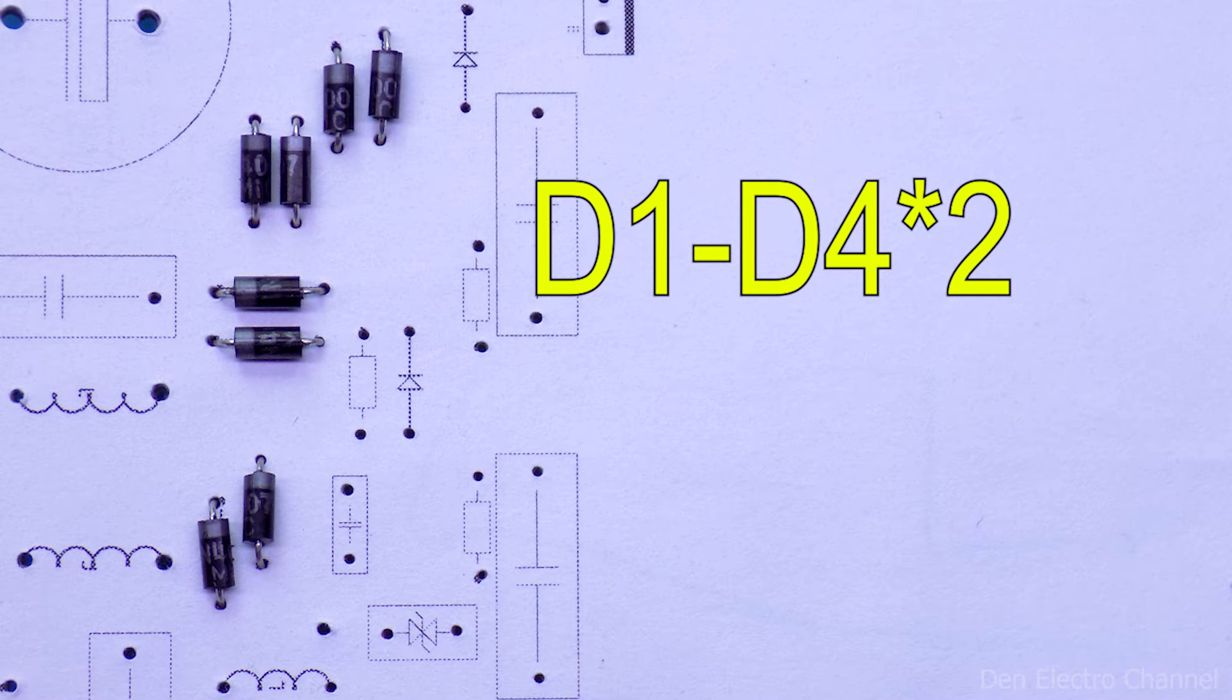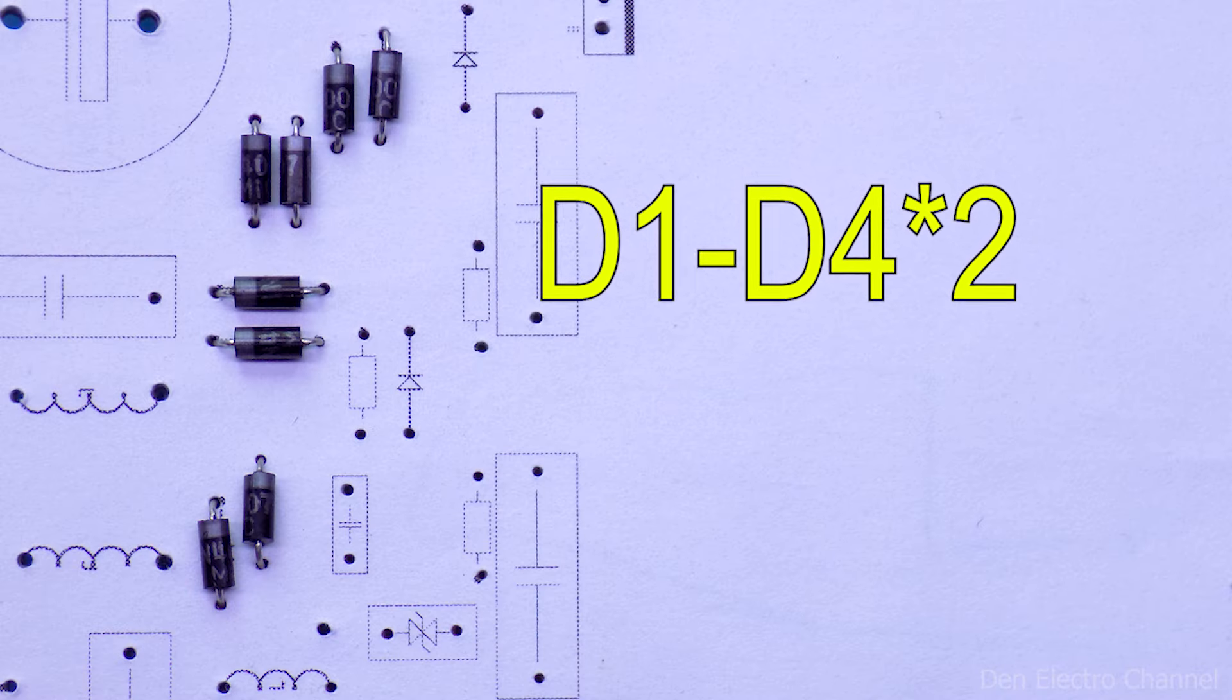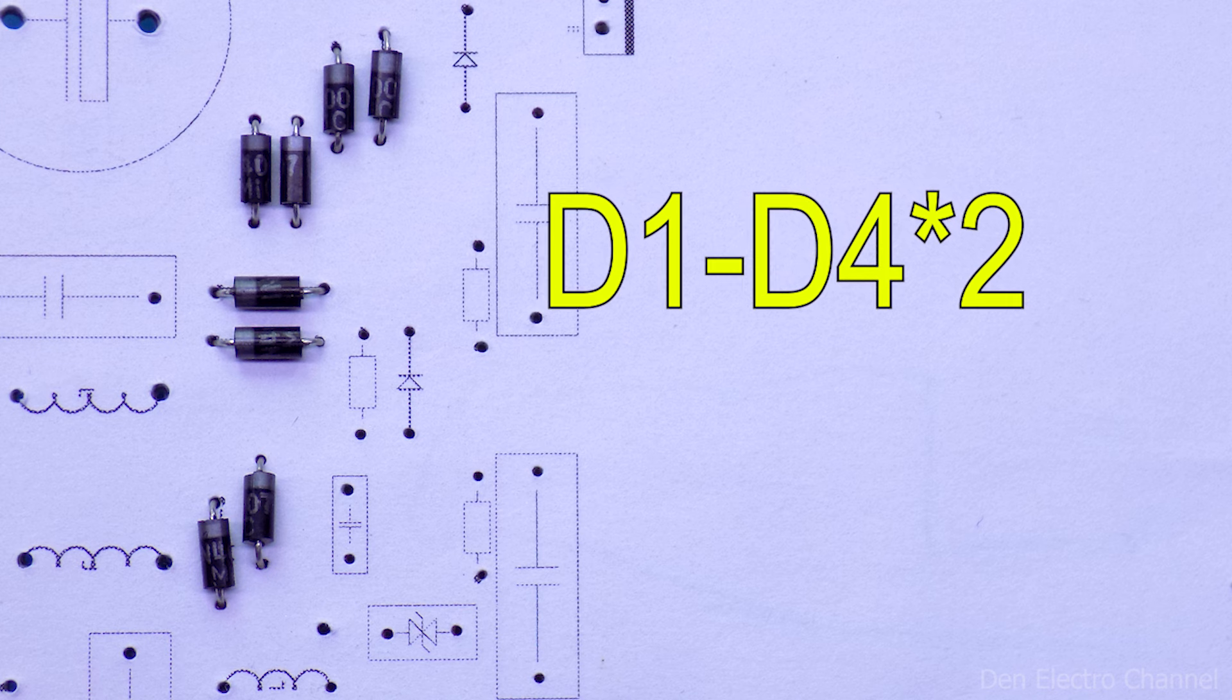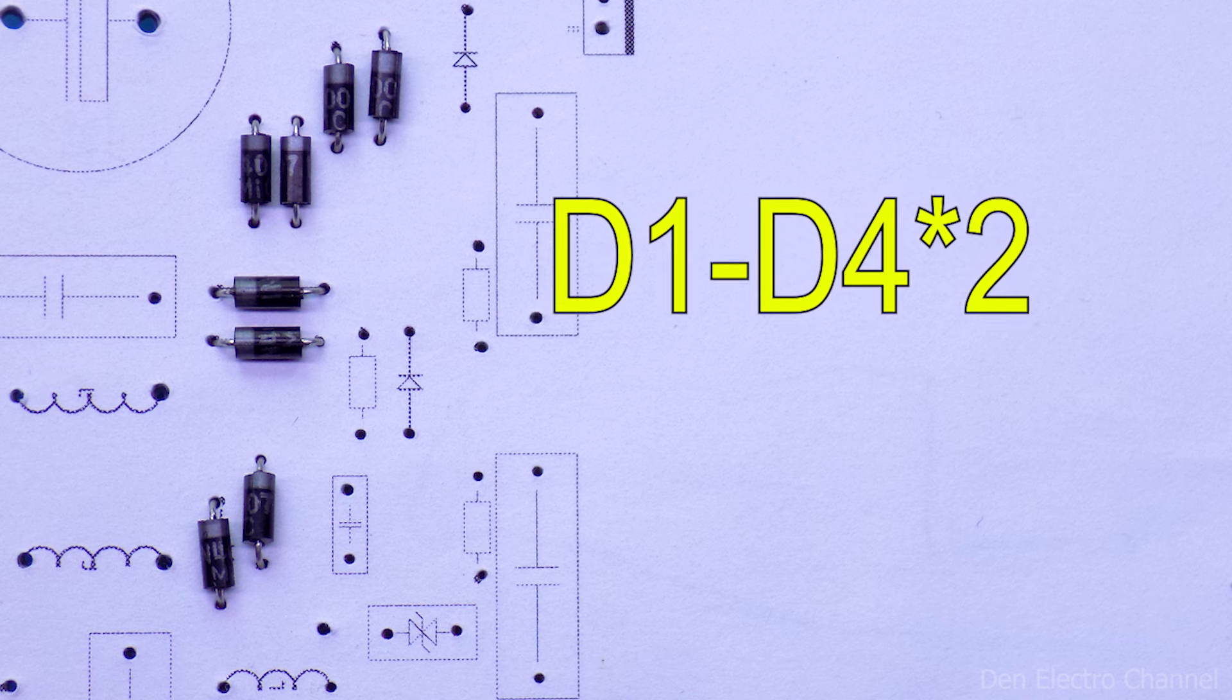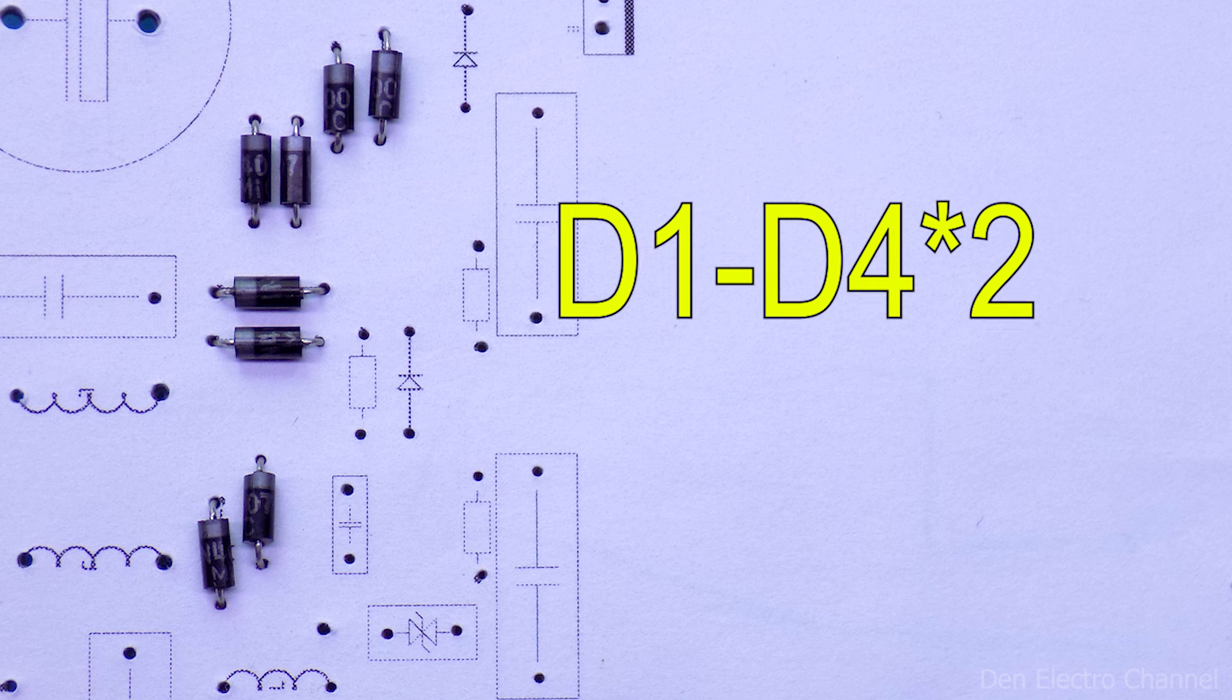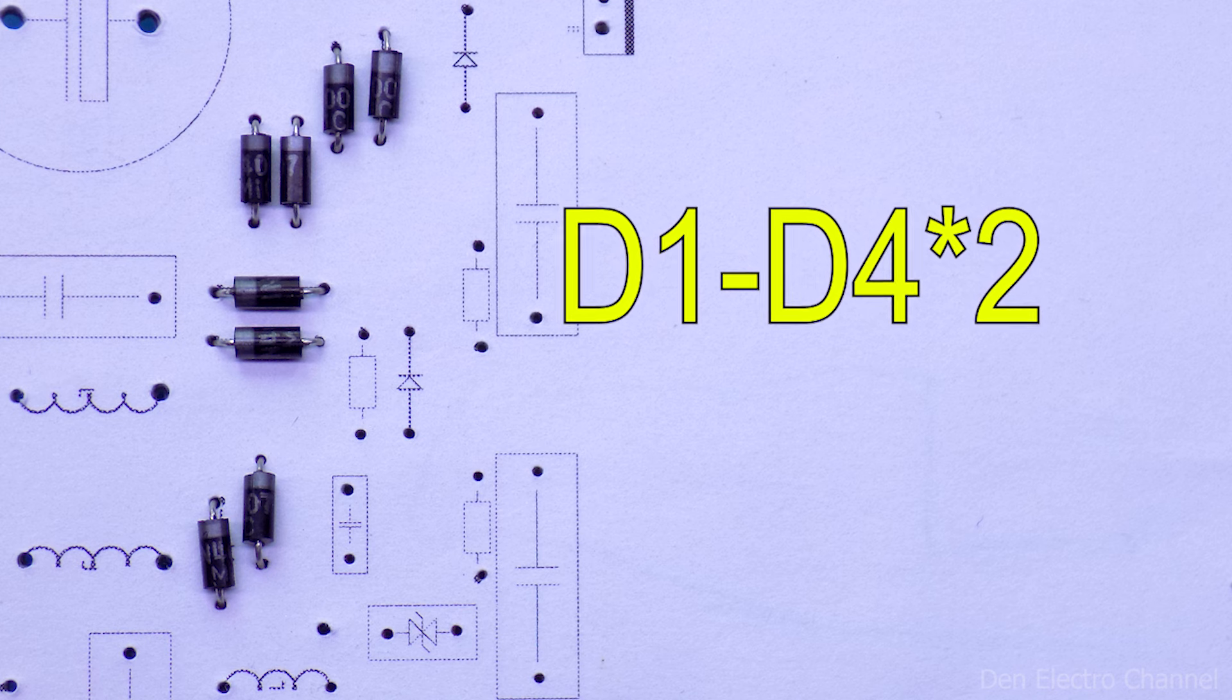The diode bridge is assembled from 81N4007 diodes. Each arm contains two diodes. In this way, the current is divided and greater throughput will be achieved.